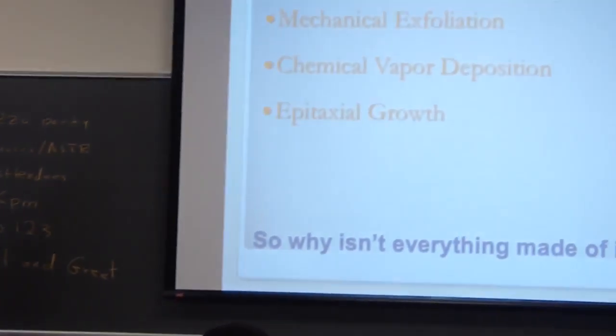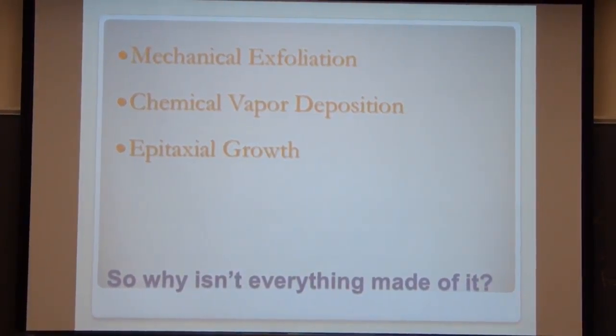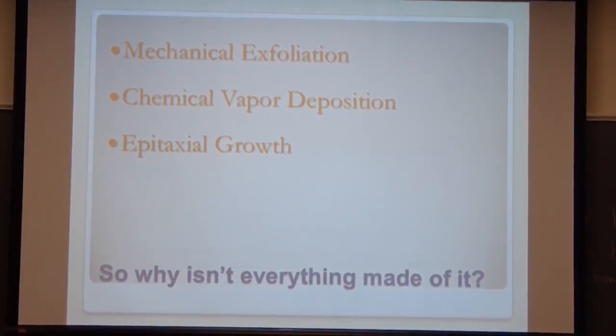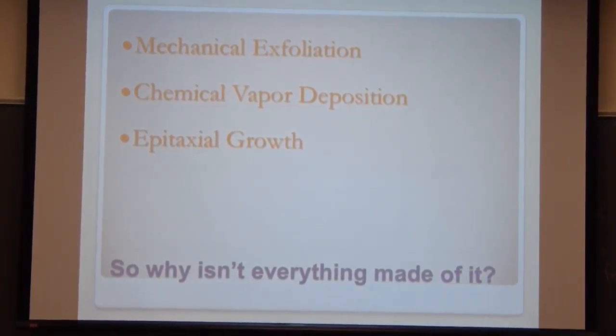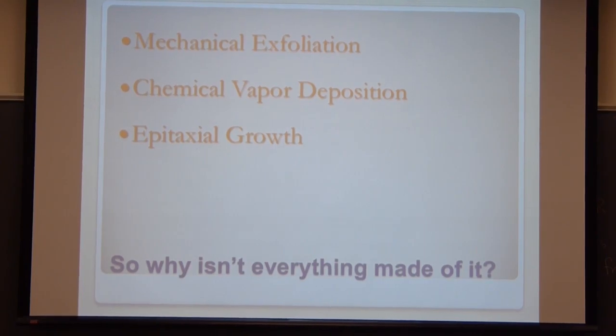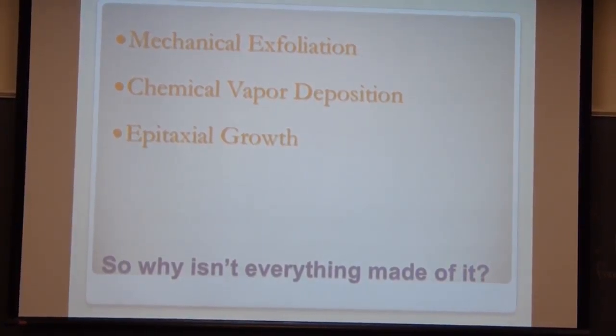So, why isn't everything made of graphene right now? I mean, it's just carbon, there's plenty of carbon. It's really hard to make graphene. So, there are a couple different methods right now. Mechanical exfoliation is what the first isolators used, what's now called the Scotch Tape method. Mechanical exfoliation is the official name of that one.